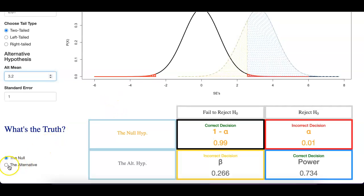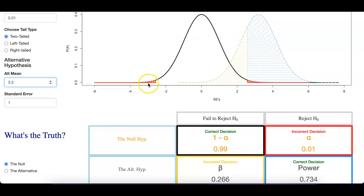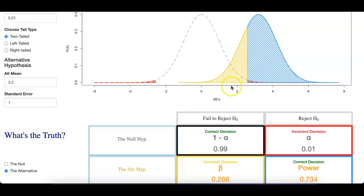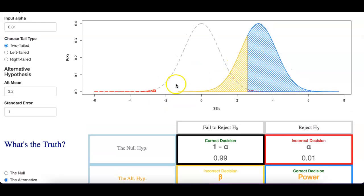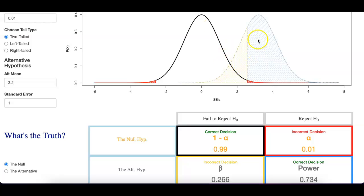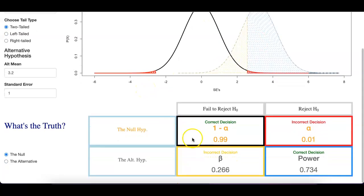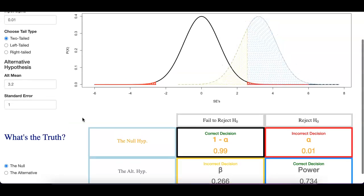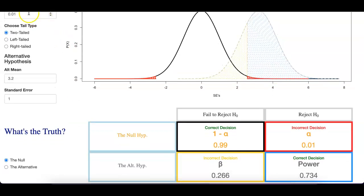I can also toggle back and forth to demonstrate which hypothesis is the truth. When I toggle between these two, one of the distributions becomes dotted and the one that was in the background becomes filled in — that represents which one is the truth. On the bottom part, whichever is the truth not only comes to the forefront visually but also lights up in the table. So with that, let's go ahead and start with some of these examples.